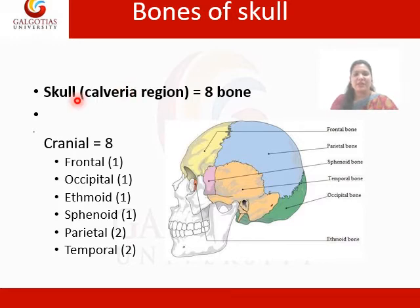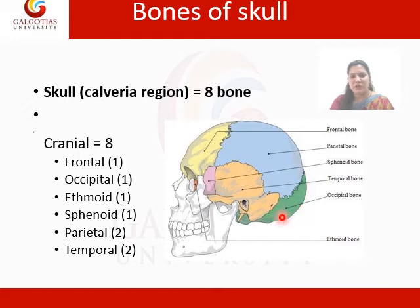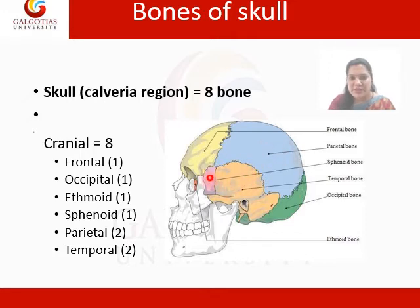The skull has eight bones. There is one frontal bone, one occipital bone at the posterior side — the base of skull — one ethmoid bone, then sphenoid, parietal and temporal. This is sphenoid, this is temporal, this is occipital, this is parietal, and this is frontal bone.